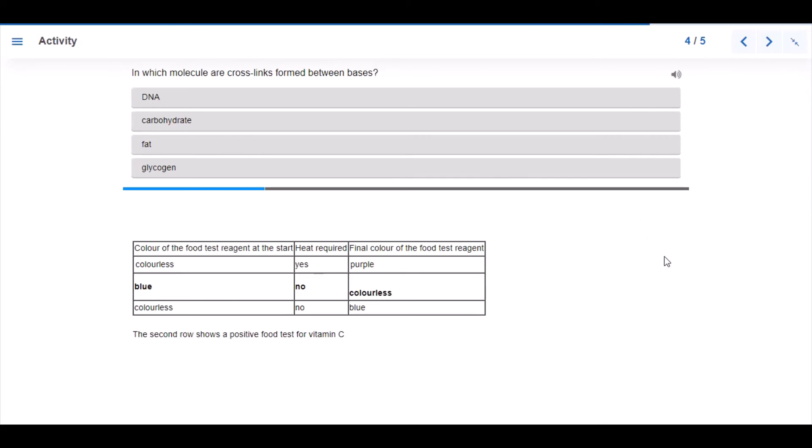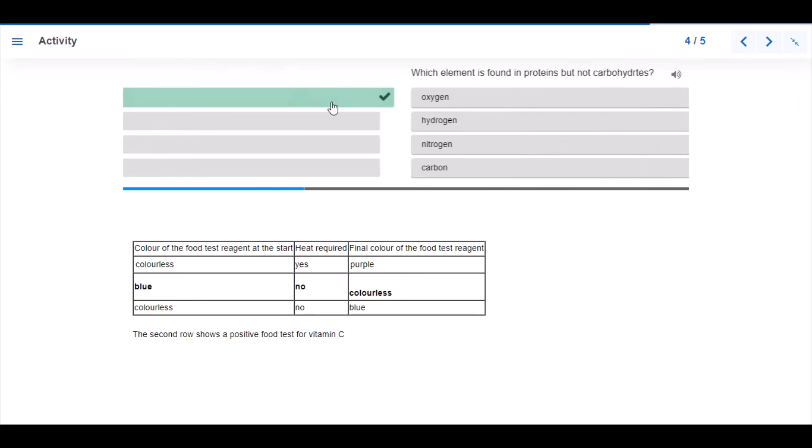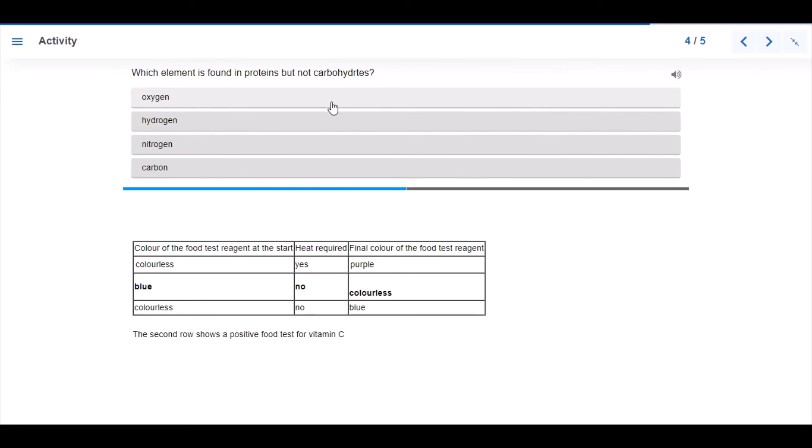In which molecule are cross links formed between bases? That would be DNA. Correct. Which element is found in proteins but not carbohydrates? Nitrogen.